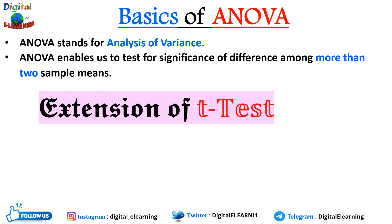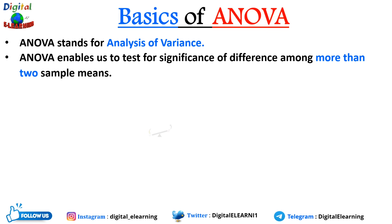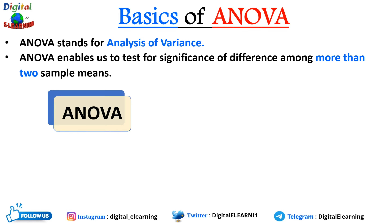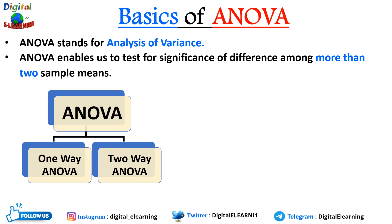However, using a t-test would not be reliable in cases when there are more than two samples. If we conduct multiple t-tests for comparing more than two samples, it will have a compounding effect on the error rate, which will lead to a higher Type 1 error (alpha) than the alpha set for each individual t-test. That is why ANOVA is important over t-test.